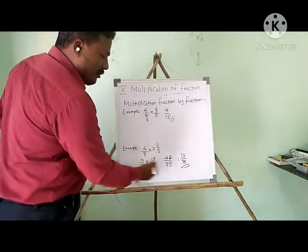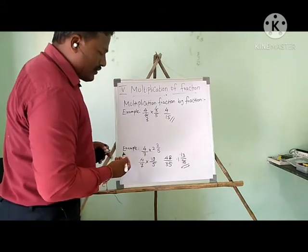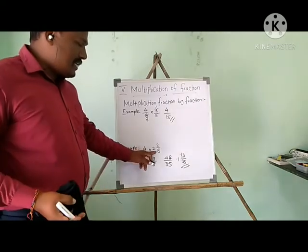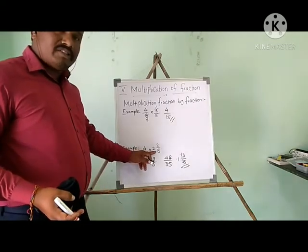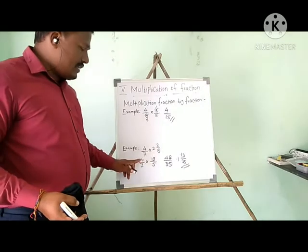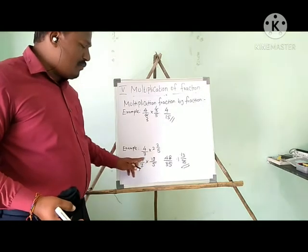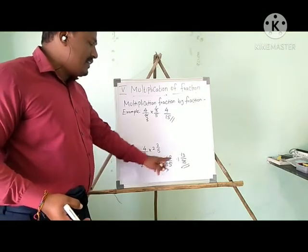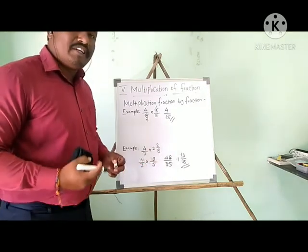If you multiply this kind of fraction, you have to follow these steps: first you have to cross multiply, then multiply both numerator and denominator, then you can simplify.